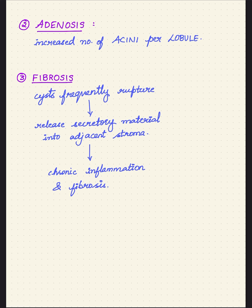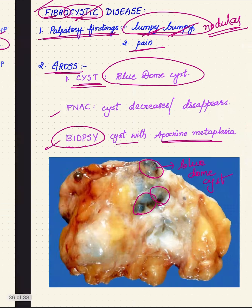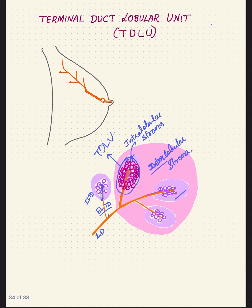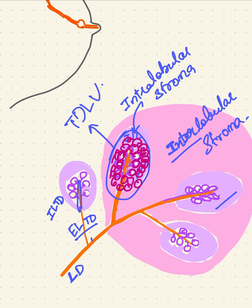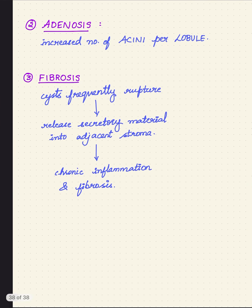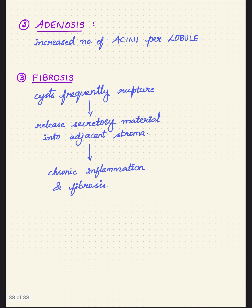The second component of fibrocystic disease is adenosis — increased number of acini per lobule. For example, if there are normally 10 acini per lobule, the number increases to 20, 25, or 30. This progressive increase in the number of acini per lobule is called adenosis.